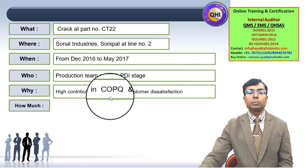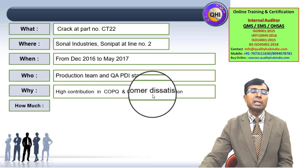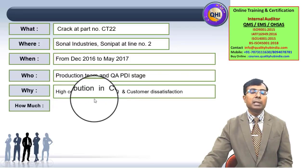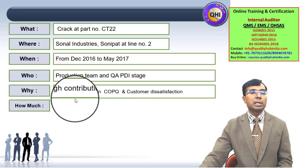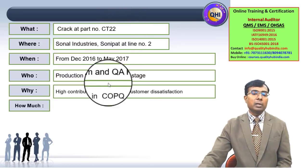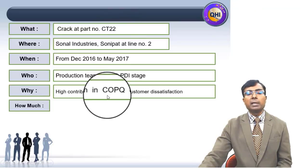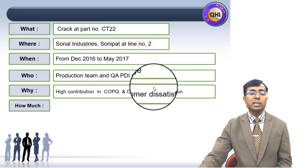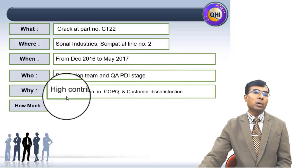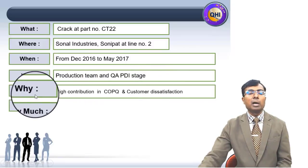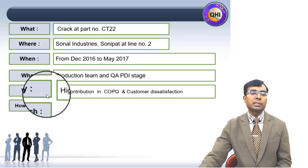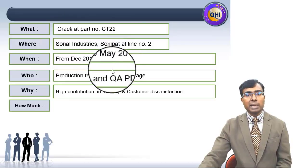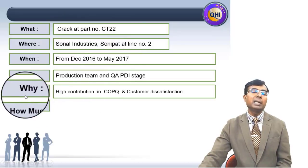The reason is high contribution to cost of poor quality and customer dissatisfaction. This is directly relevant to cost of poor quality, it is relevant to the customer, and it is leading to customer dissatisfaction — that's why it is important. This is essentially the business case explaining why the team should focus on this project rather than something else.